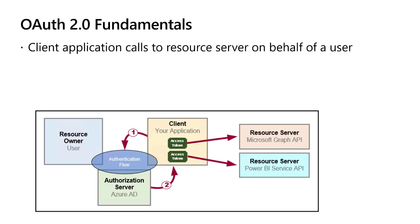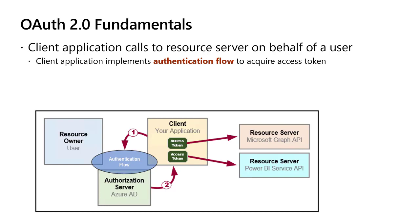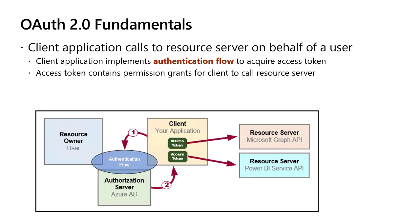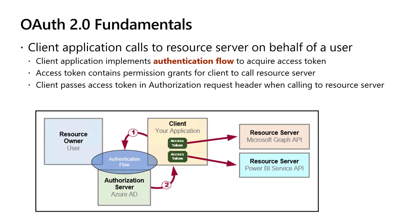OAuth 2.0 is structured on the idea that you create a client application that needs an access token. Your client application implements what's called an authentication flow to acquire access tokens. The access token contains permissions or scopes that the client application has been granted to call resource servers — APIs like the Microsoft Graph API or the Power BI Service API. Each time the client calls a secured resource like the Power BI Service API it must pass the access token in the authorization request header.